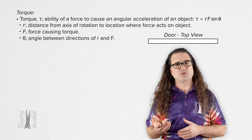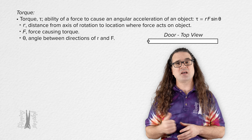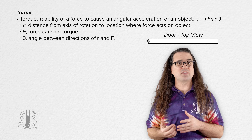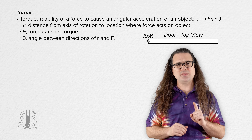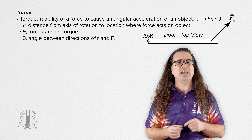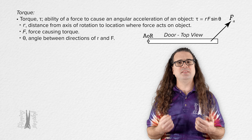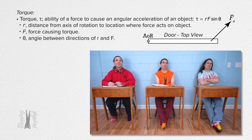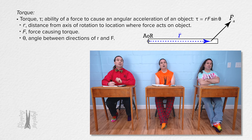Let's say we have a door and we are looking at the door from above. The hinge of that door is on the left side of the door, which means that is where the axis of rotation of this door is. If we push on the door causing a force applied and torque as shown in the illustration, Bo, where should we draw r in this illustration? R is the distance from the axis of rotation to the location where the force acts on the object, so r should start at the axis of rotation and go all the way over to where the force is applied to the door.